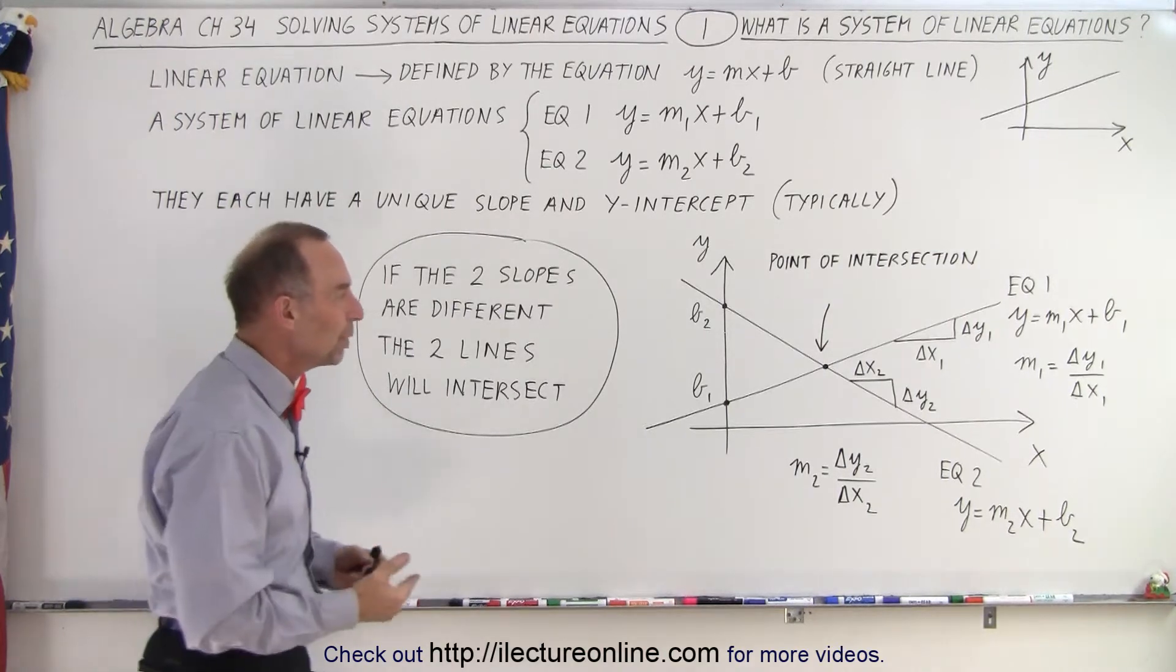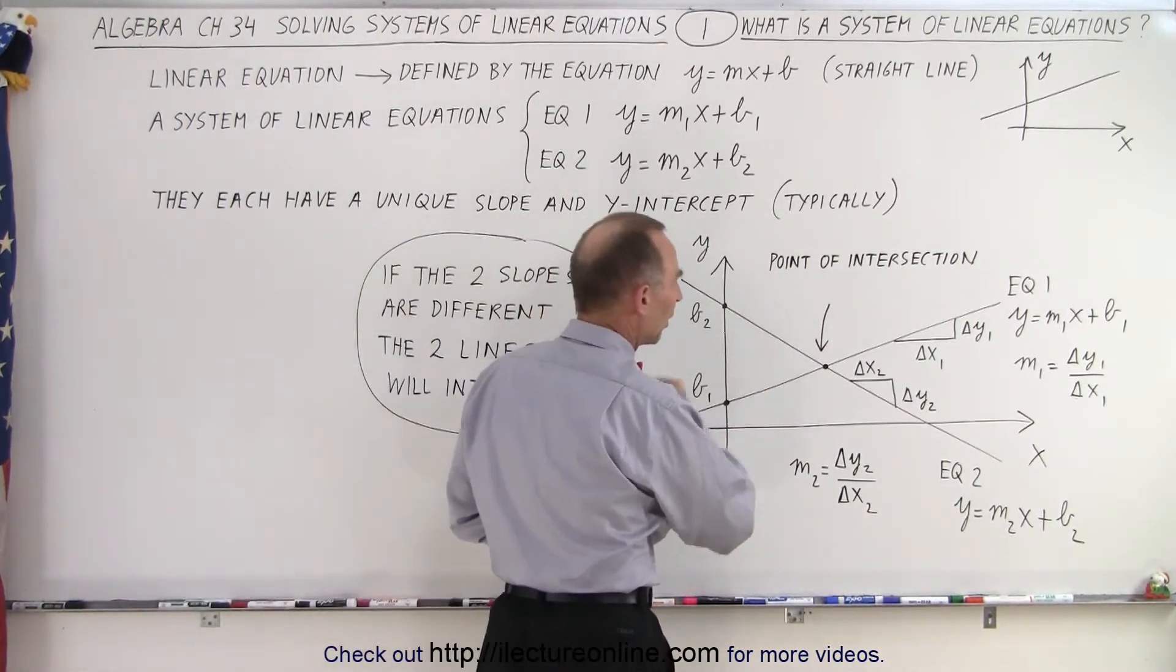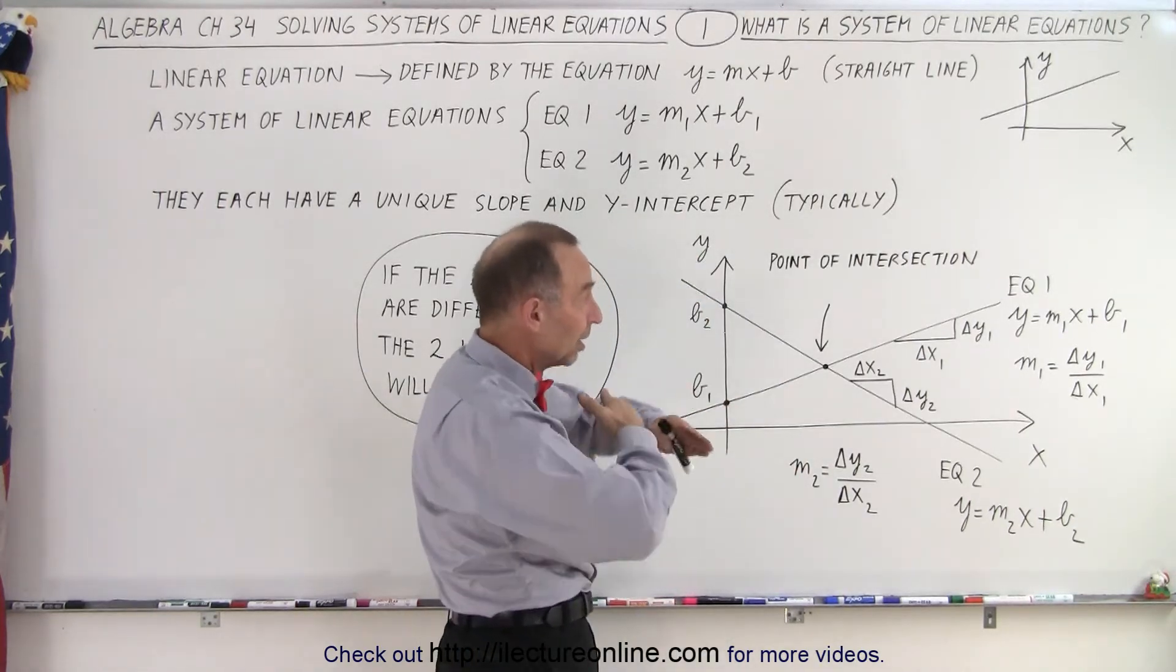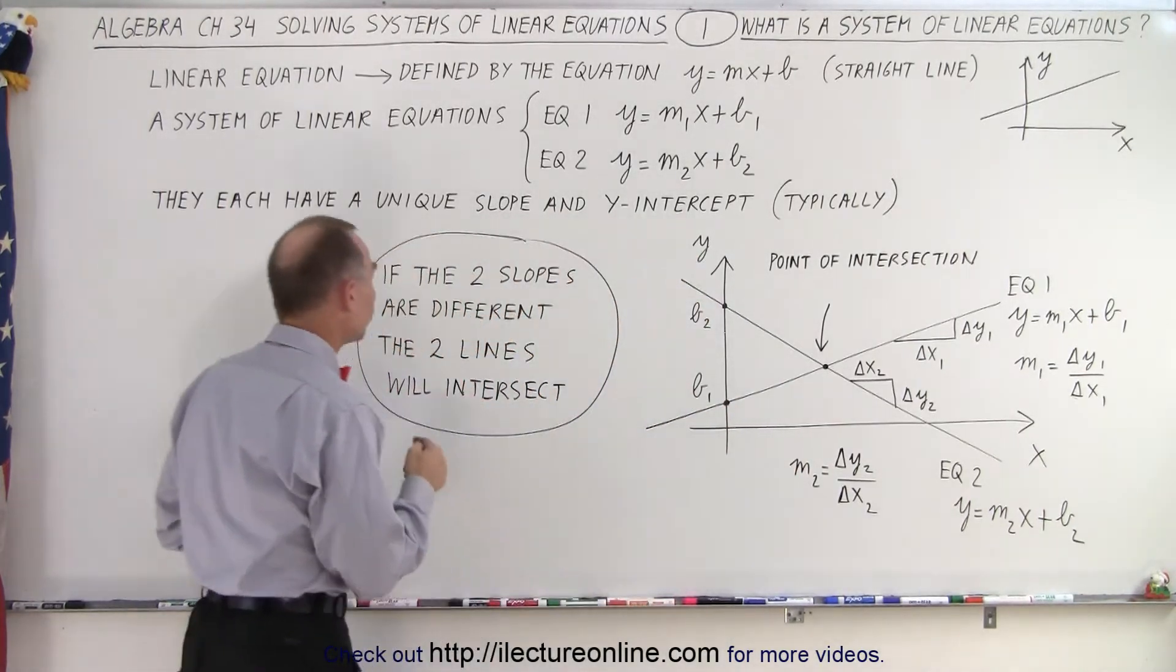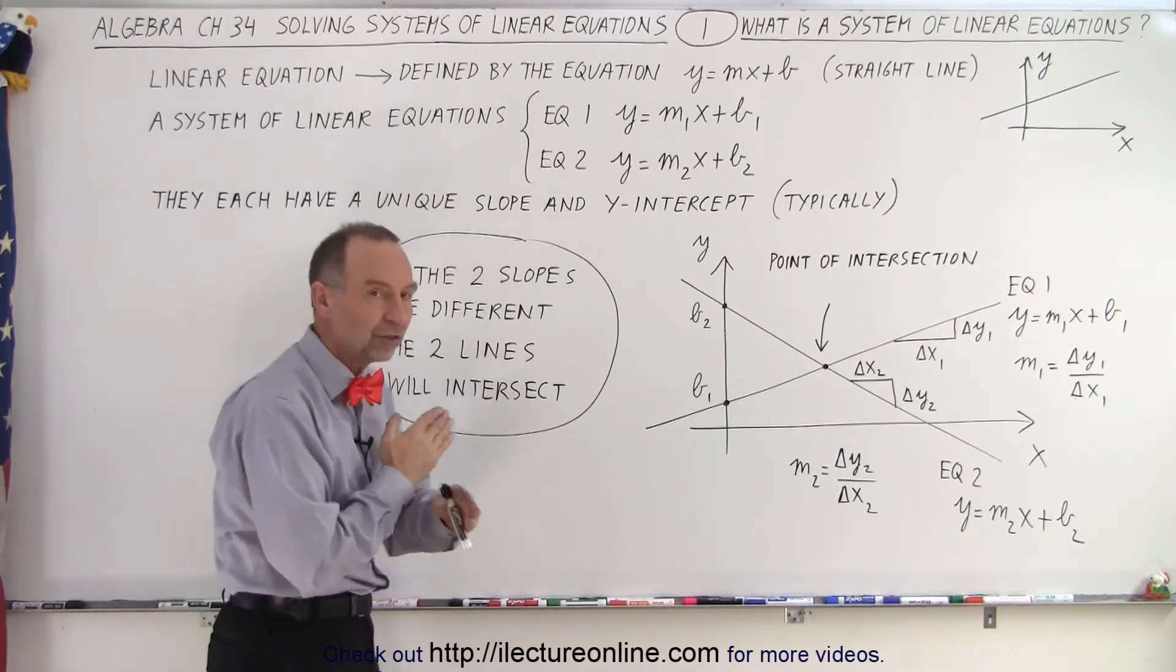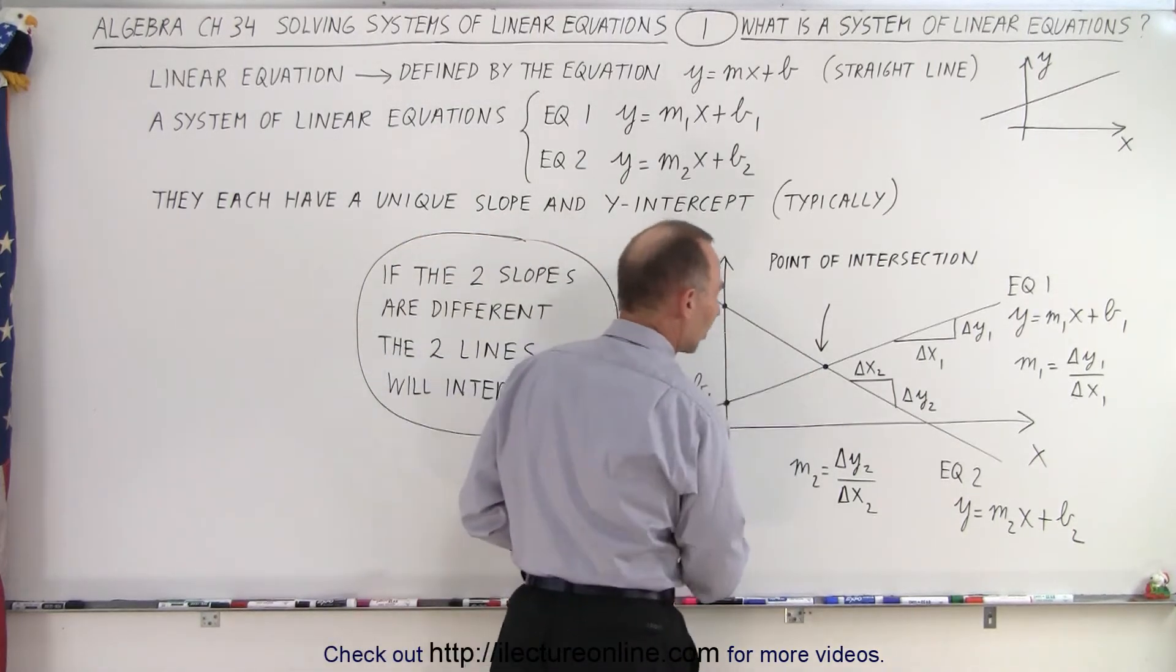So what happens when we then graph the two equations? We get two lines. Since they have a different slope, they will be oriented in a different direction, and we can be sure that if the two slopes are different, the two lines will intersect somewhere. There will be what we call a point of intersection.